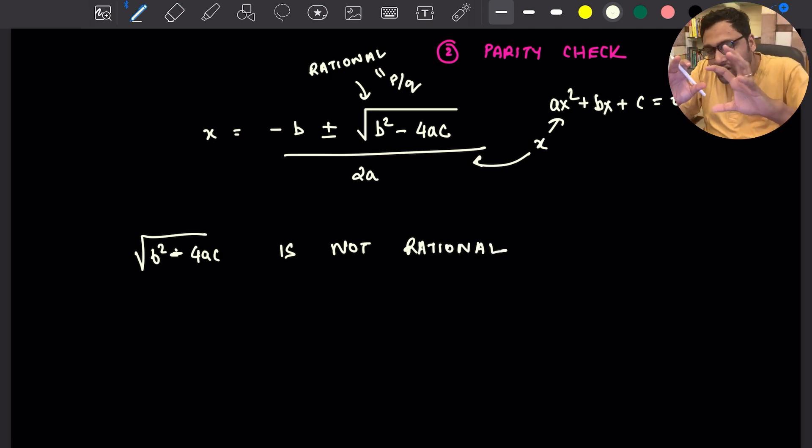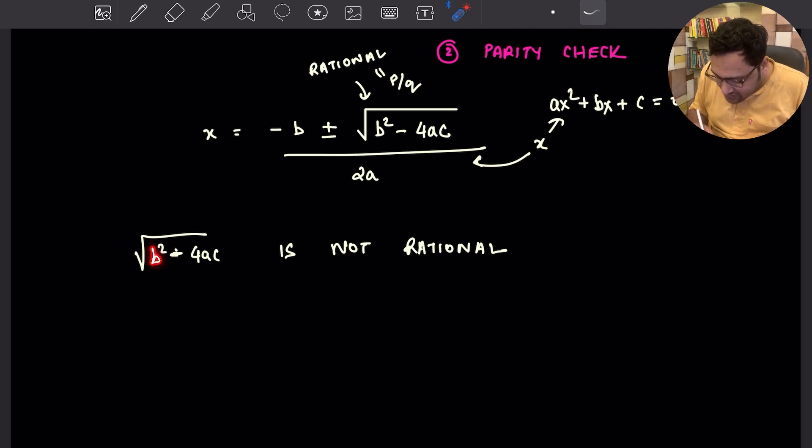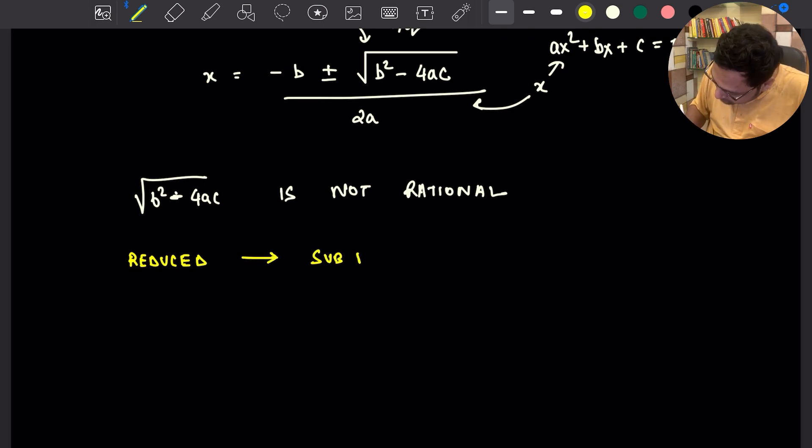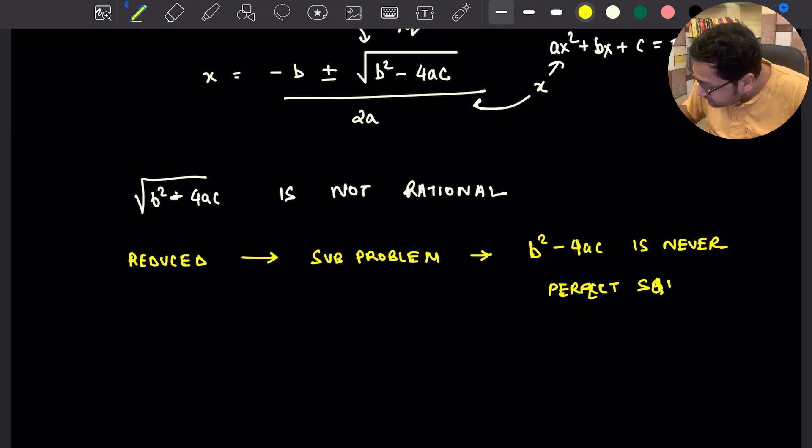In other words, you cannot extract the square root. The point is that B square is an integer, 4AC is an integer. Therefore, B square minus 4AC is an integer. If you cannot take the square root, which means this is not a perfect square. So all we have to show that B square minus 4AC cannot be a perfect square if A, B, C are odd integers. We have reduced the problem.